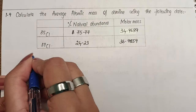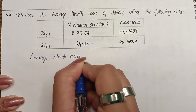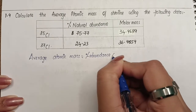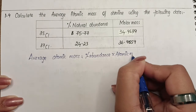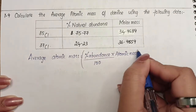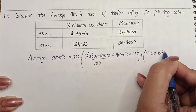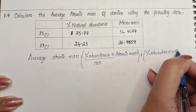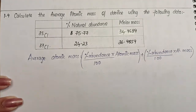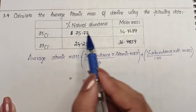Average atomic mass equals: (percentage abundance × atomic mass) divided by 100, in a bracket, plus the same thing for the second isotope — percentage abundance of the second isotope multiplied by atomic mass, divided by 100.